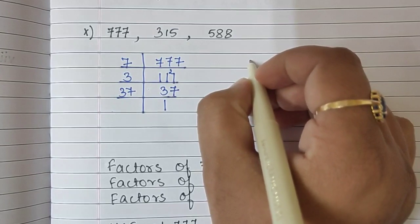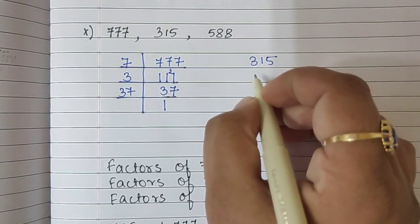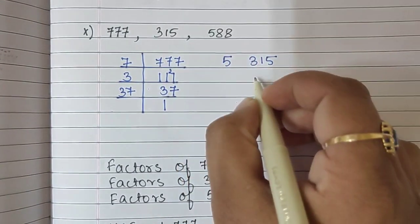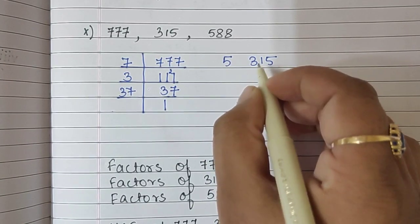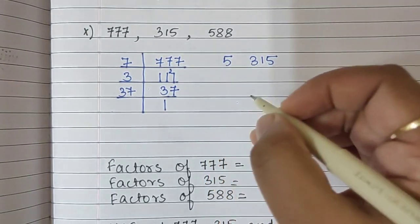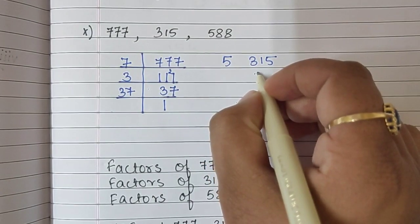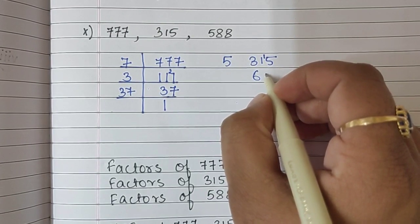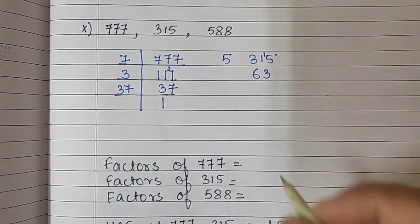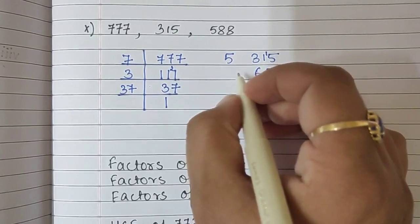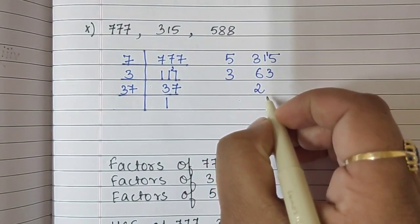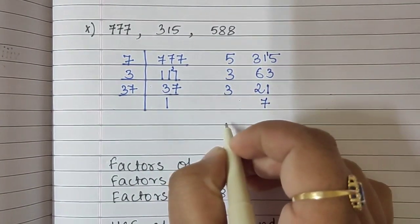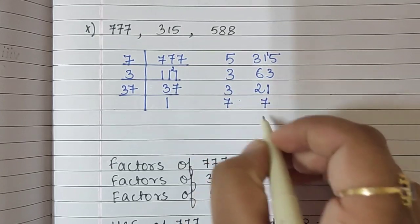The next number is 315. 315 ends with 5, so we will begin with 5. It's also divisible by 3, but it becomes easier to put 5 here. 5 sixty-threes are 315. Then 3 twenty-ones are 63, 3 sevens are 21, and 7 ones are 7.